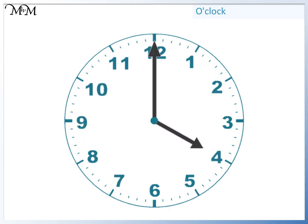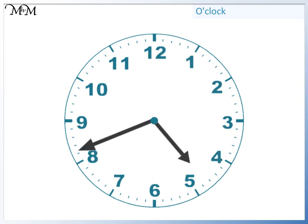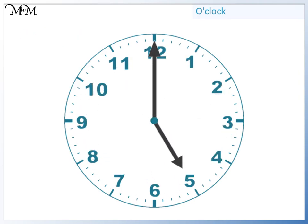The hour hand is pointing at 4. The minute hand is pointing at 12. The time is 4 o'clock. The minute hand does another full turn, and the time is 5 o'clock.